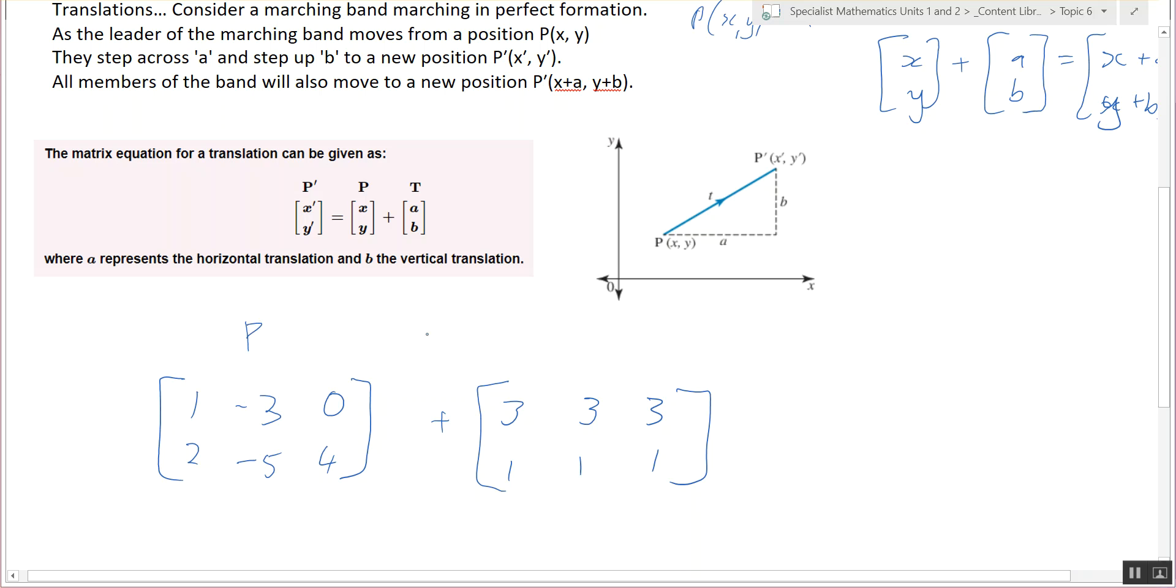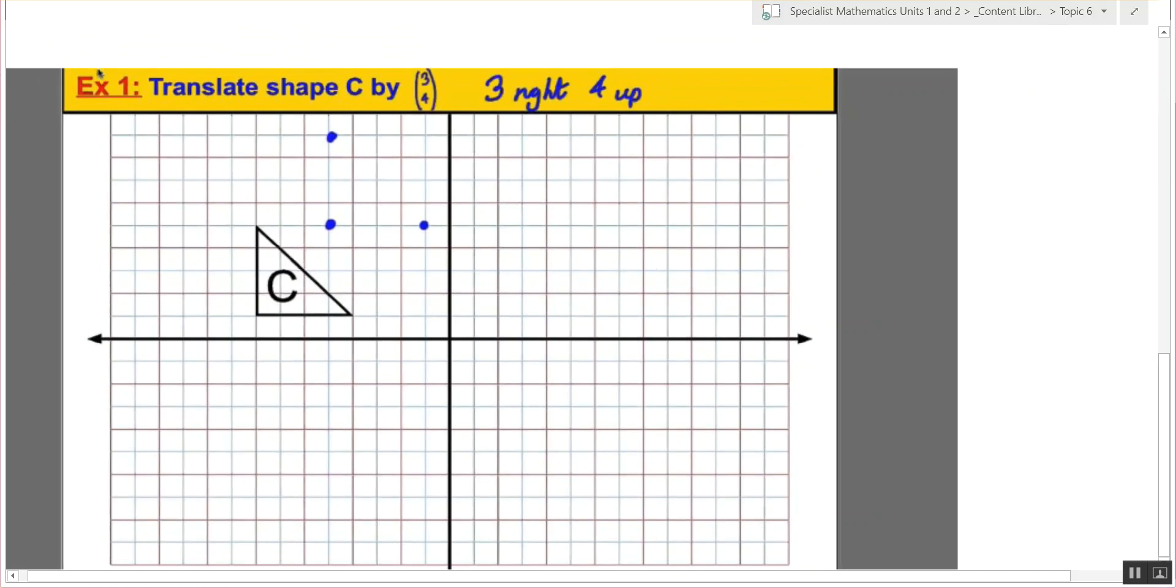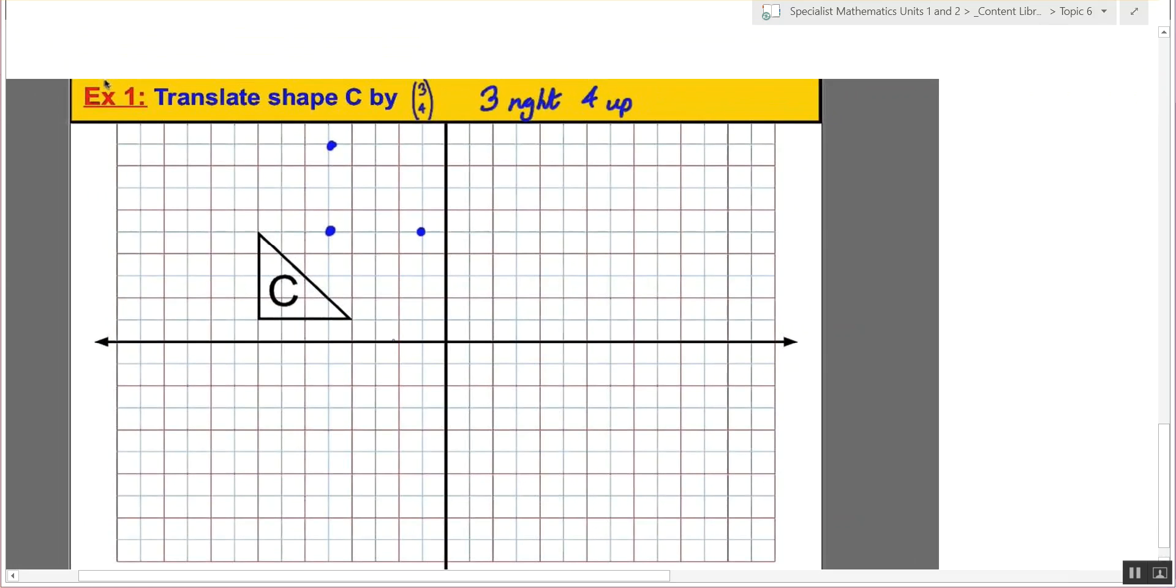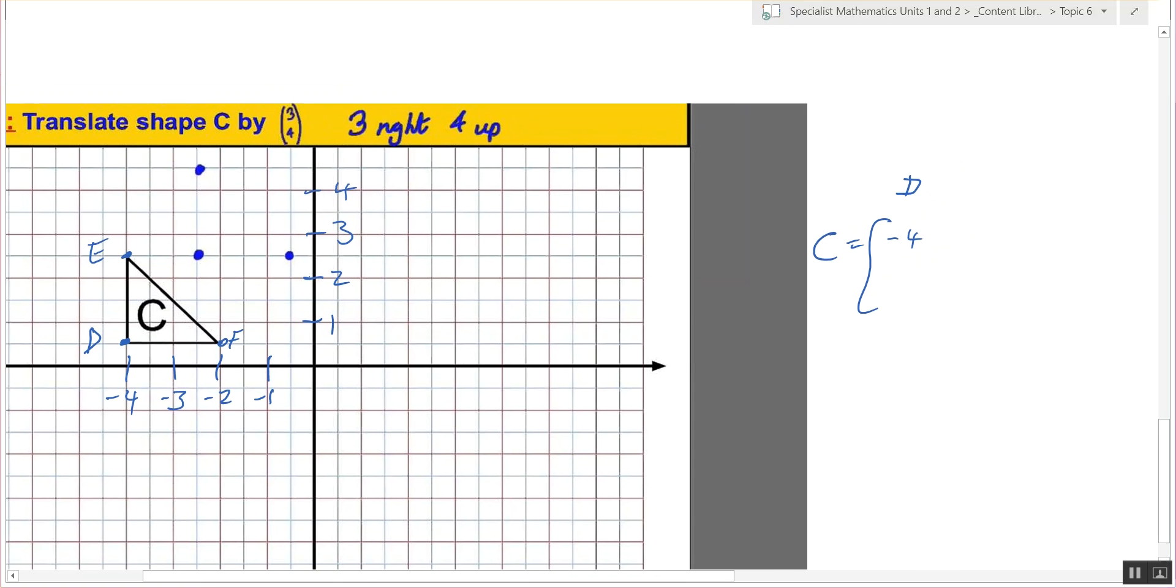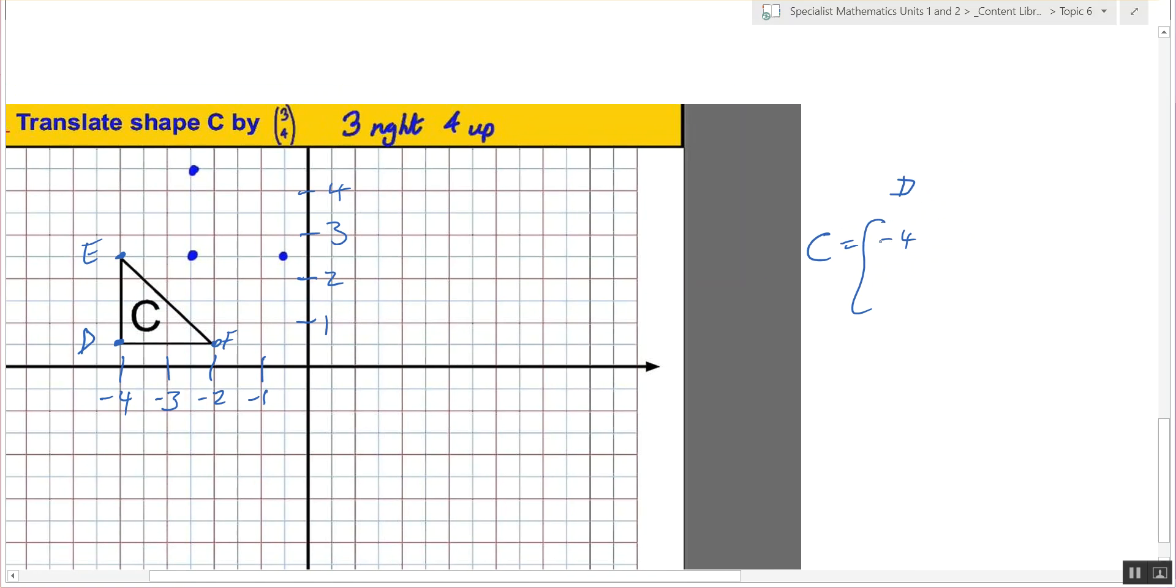So this is P or I don't know, it could be S for shape, translation, and then you... So let's put the shape into D, E, F. So point D is negative 4 in the X and 0.5 in the Y.